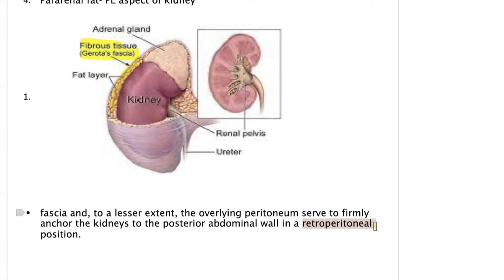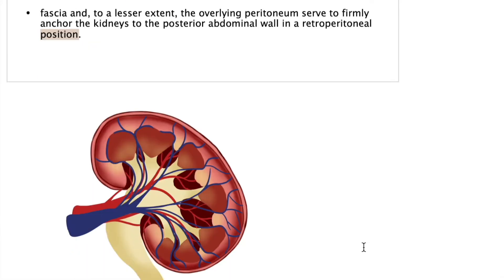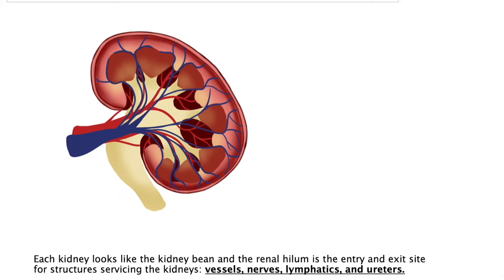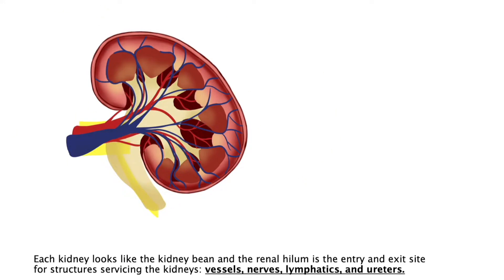The hilum of the kidney is present medially. The kidney looks like a kidney bean, and the renal hilum is the entry and exit site for structures. The main structures here are the renal vein, the renal artery, the ureter, and the lymphatics — all located in this area called the hilum of the kidney.